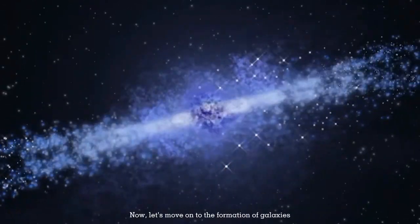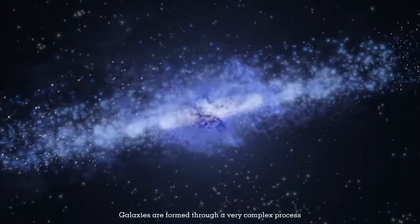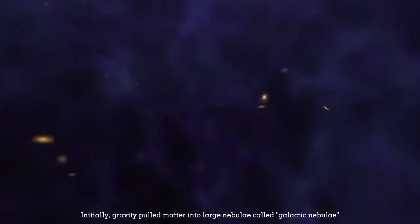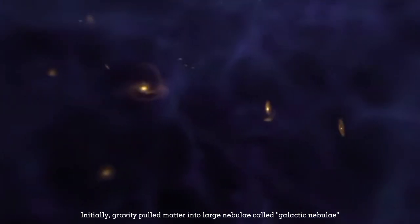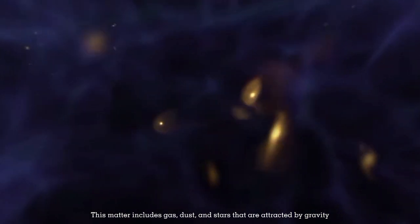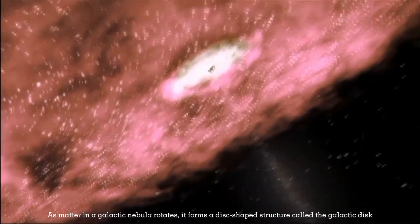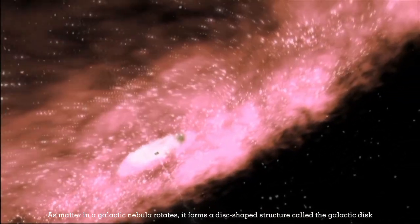Now, let's move on to the formation of galaxies. Galaxies are formed through a very complex process. Initially, gravity pulled matter into large nebulae called galactic nebulae. This matter includes gas, dust and stars that are attracted by gravity. As matter in a galactic nebula rotates, it forms a disk-shaped structure called the galactic disk.